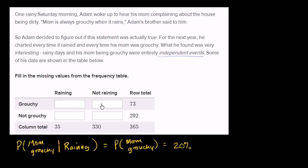This should be 20%. She should be grouchy 20% of the time that it's raining, and she should be grouchy 20% of the time that it's not raining. That would be consistent with the data saying that these were entirely independent events.